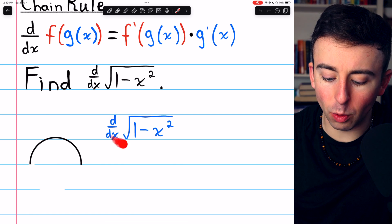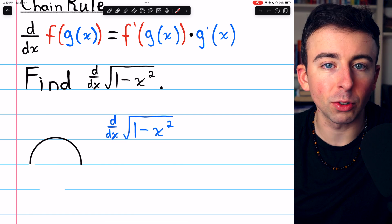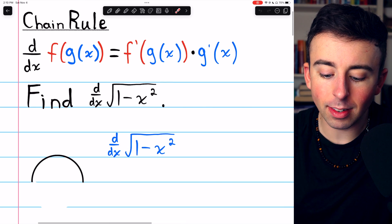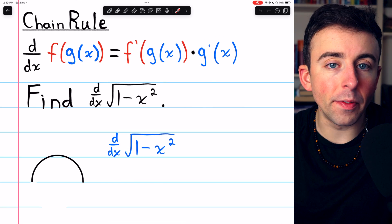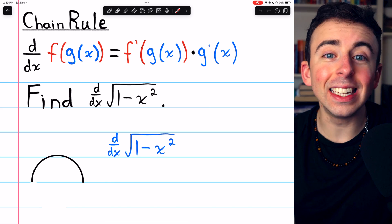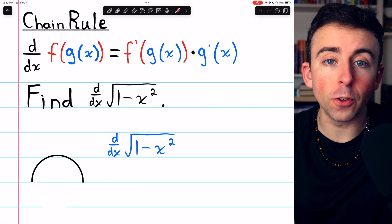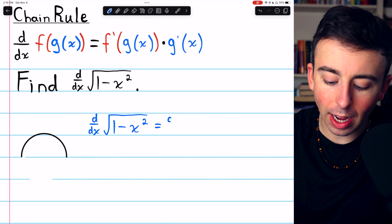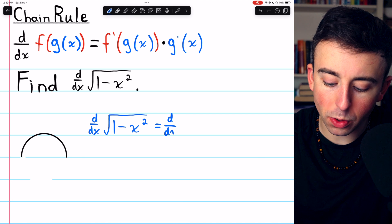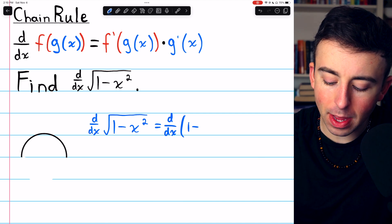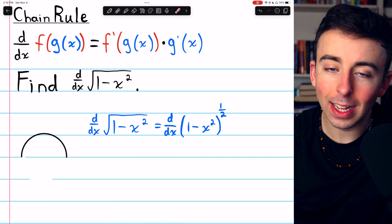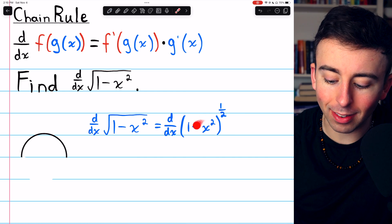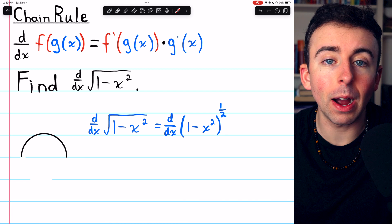All right, so let's take the derivative of the square root of 1 minus x squared. The chain rule begins with f prime of g of x — that's the derivative of the outside function, leaving the inside function unchanged. Our outside function is the square root, but to take the derivative of that, it might be helpful to rewrite this as a power. The square root of 1 minus x squared is the same as 1 minus x squared to the one half power.